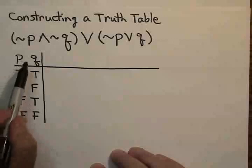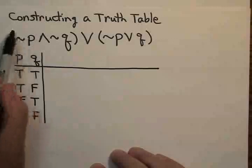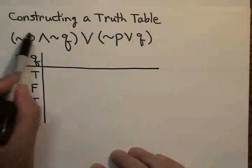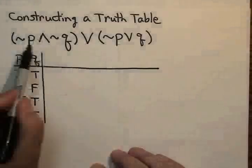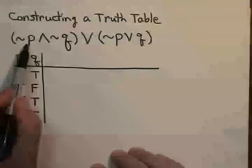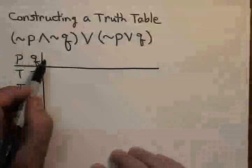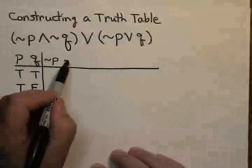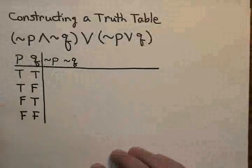Now, I want to start by constructing this entire statement a piece at a time. I know by looking through here that I'm going to need a not P column and a not Q column, so I may as well go ahead and do that.